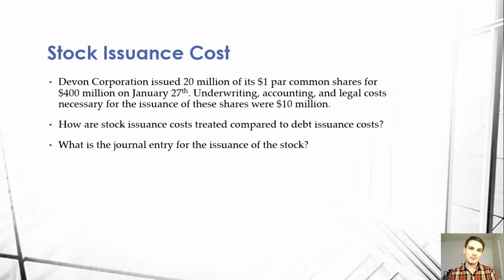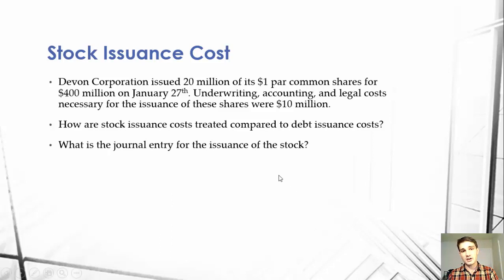Devin Corporation issued 20 million of its $1 PAR common shares for $400 million on January 27th. Underwriting, accounting, and legal costs necessary for the issuance of these shares were $10 million. How are the stock issuance costs treated compared to debt issuance costs, and what is the journal entry for the issuance of stock?